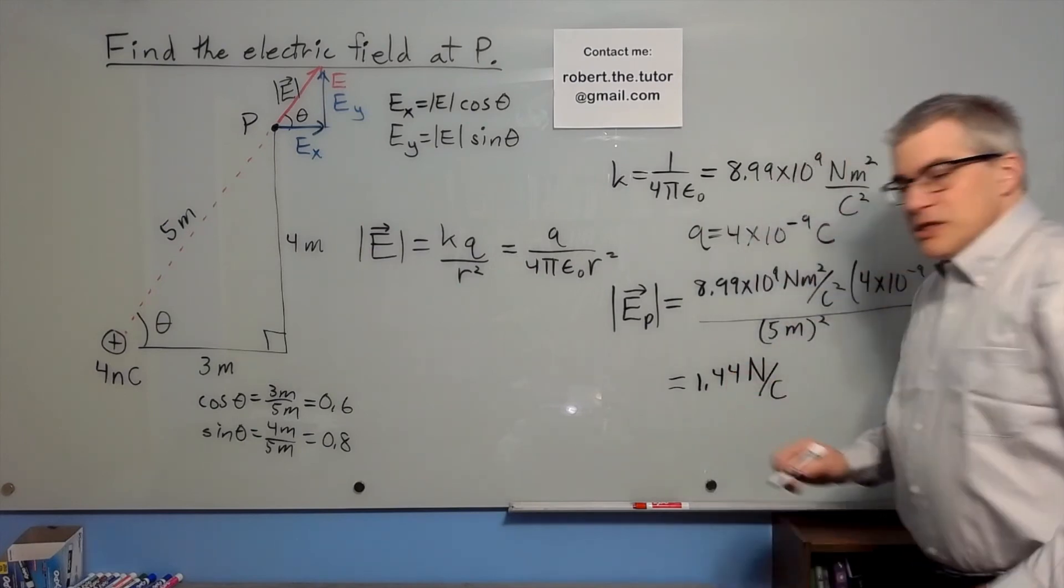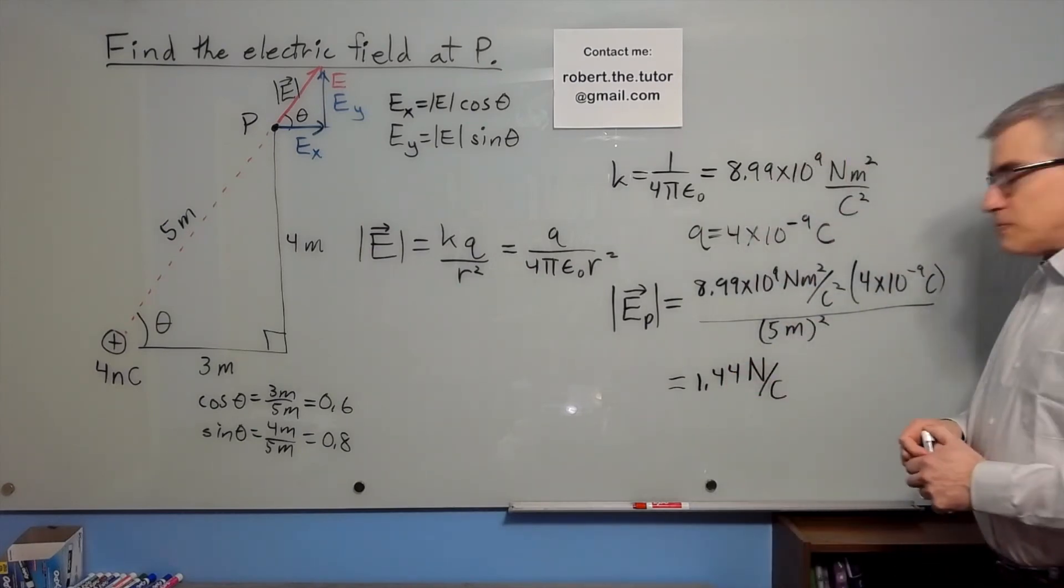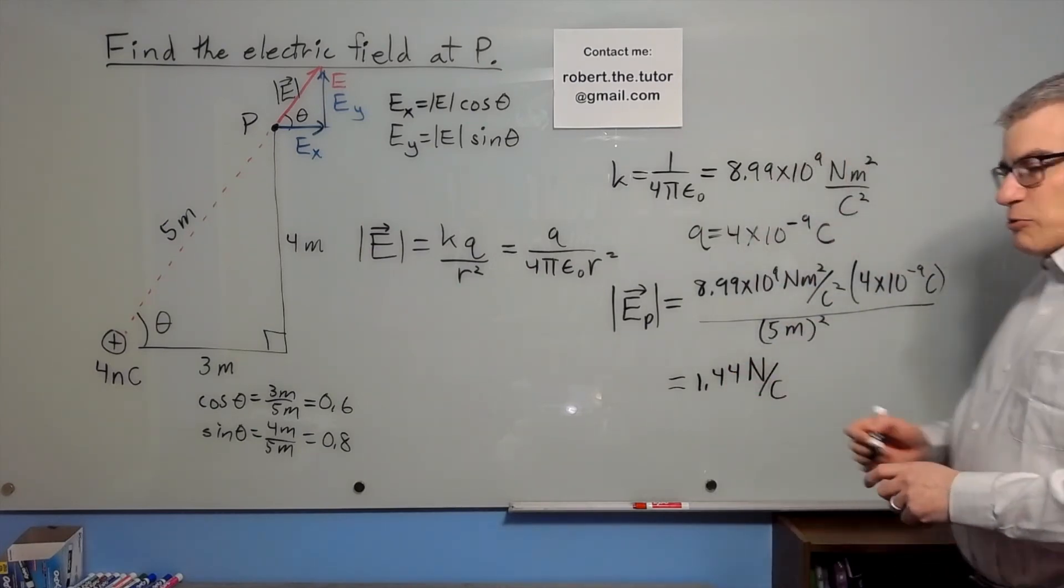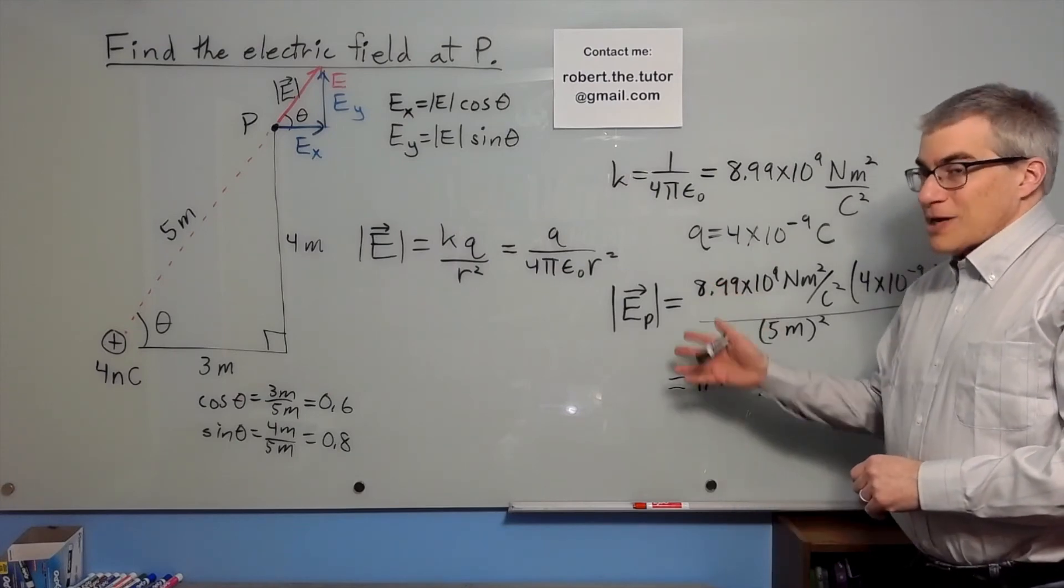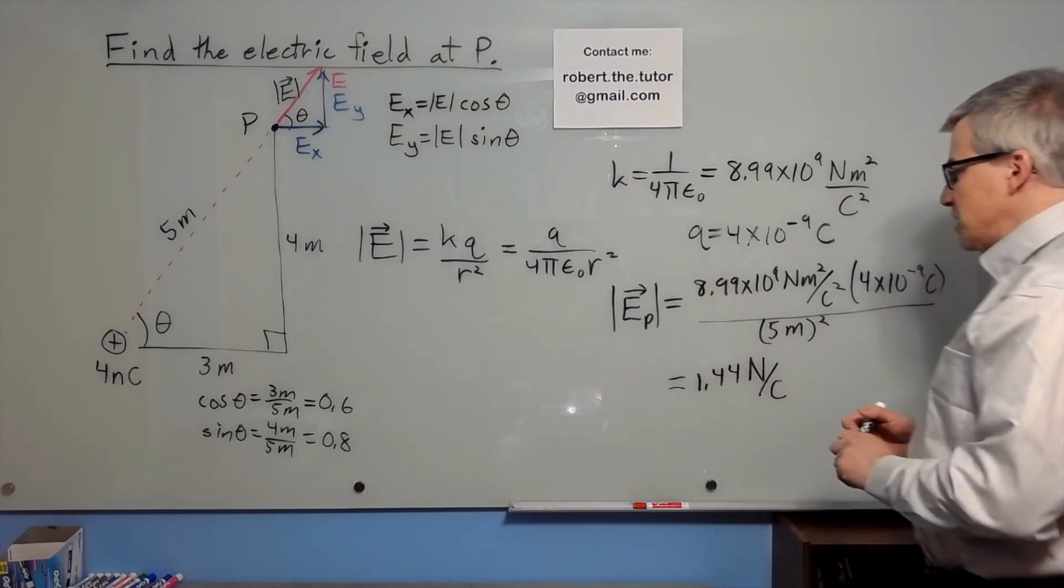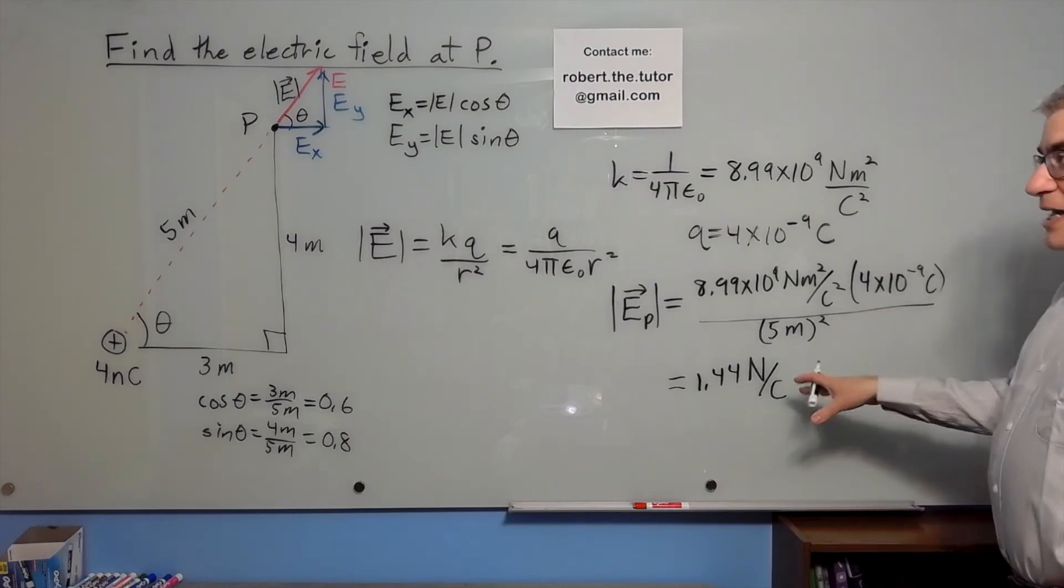And those are units of electric field. Your class might refer to it as negative potential gradient, but it's electric field in just about every book you'll find. That's the magnitude.